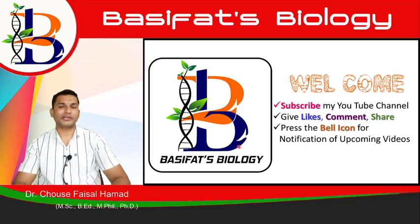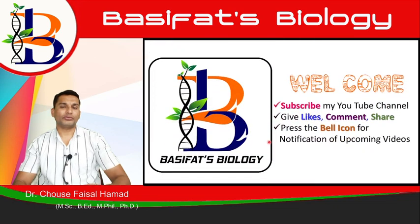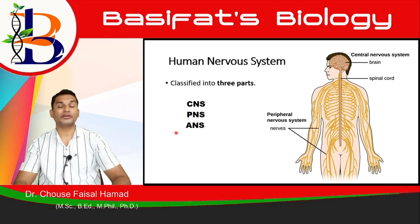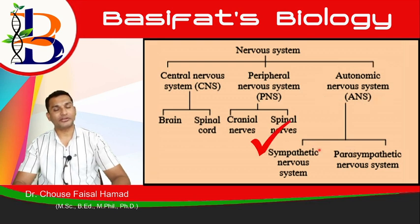Hi, welcome back to the Basakot Biology channel. Give likes, give comments, share the links, and press the bell icon. Today we are going to continue the same topic — the human nervous system. As we know, the human nervous system is made up of three parts: the central nervous system, the peripheral nervous system, and the autonomic nervous system. We are going to look at the autonomic nervous system, which has two components: the sympathetic and the parasympathetic autonomic nervous system.